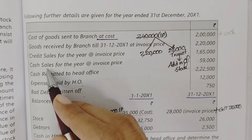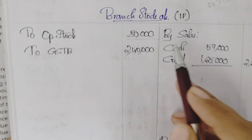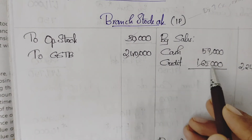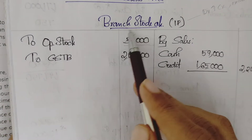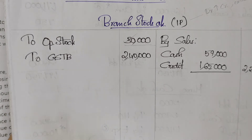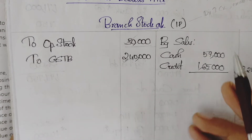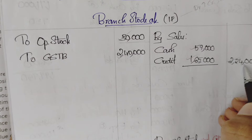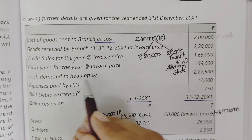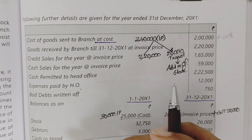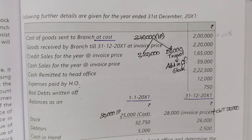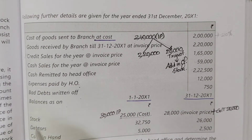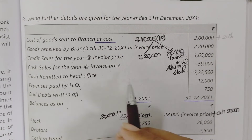Then credit sales and cash sales — in the stock and debtors method, branch stock account is similar to a trading account, so credit sales and cash are credited. Cash remitted to head office is cancelled in the cash account. The stock account is also cancelled. Expenses paid by HO and bad debts return are recorded. The closing balance of stock is $48,000.